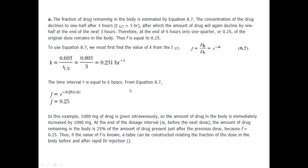Now calculate the fraction using F = e^(−k·lambda). Here k = 0.231 and lambda = 6 hours (dosage interval). This gives F = 0.25, confirming that the fraction of dose remaining in the body after six hours is 0.25.